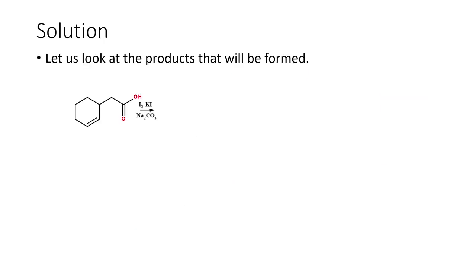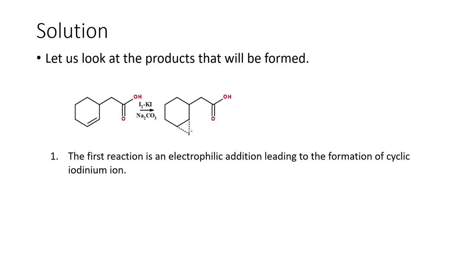Let us look at how the reaction actually proceeds. The first step involves formation of a cyclic iodonium ion, because this is an electrophilic addition reaction. I⁺ is the species that adds in the first step, and we get a cyclic iodonium ion.